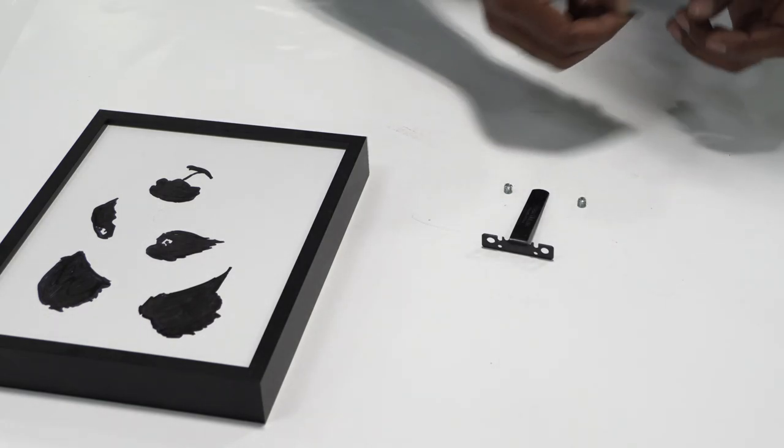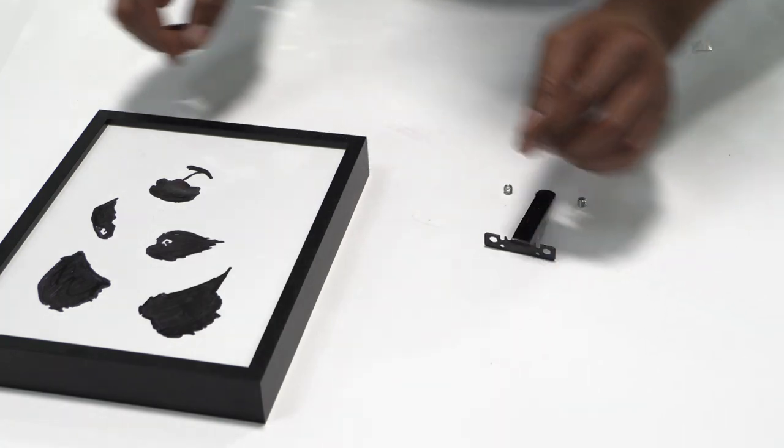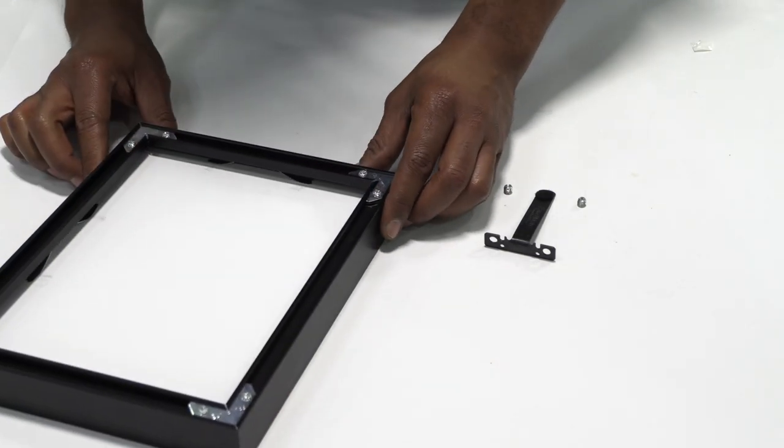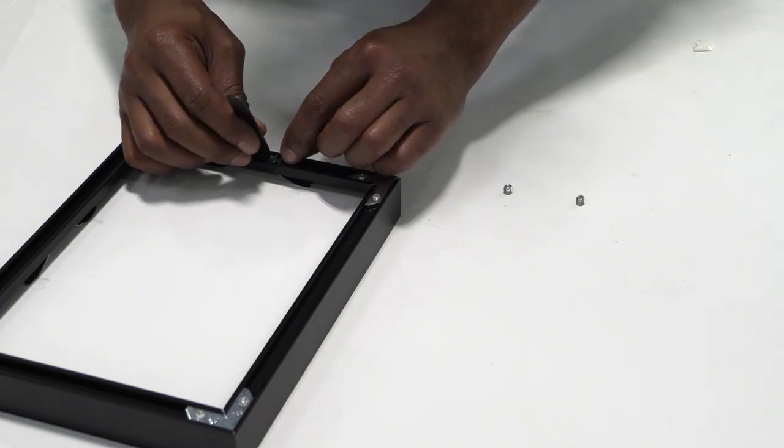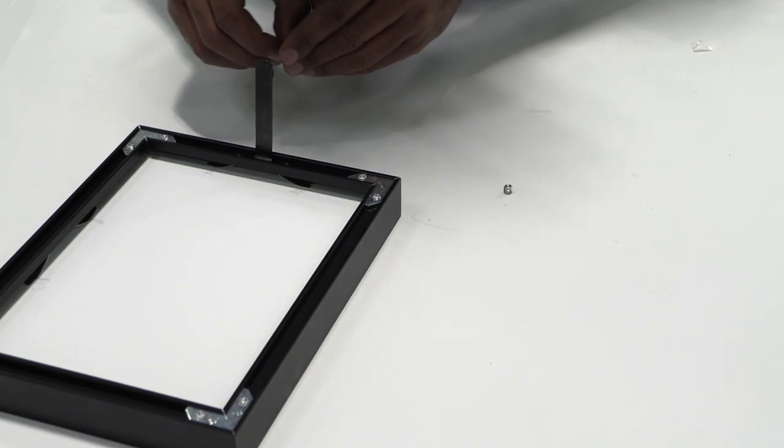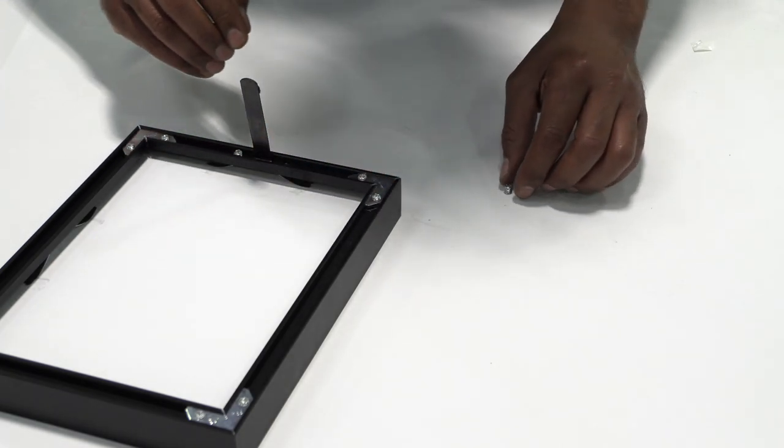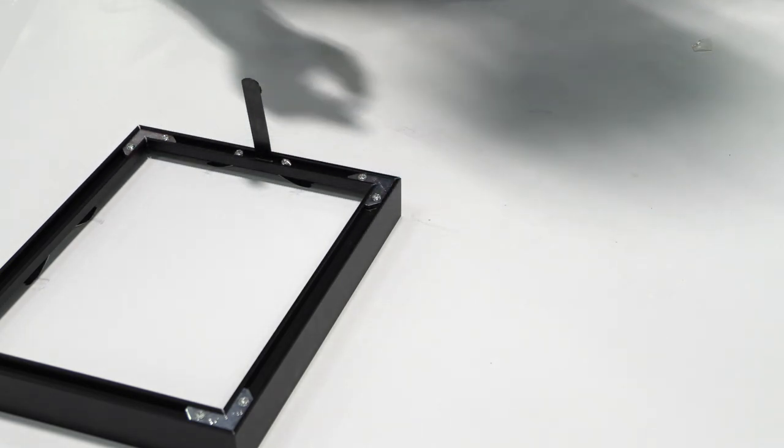For a metal frame, attach the included felt pad to the underside of the easel mate's long end. Align the bracket side to the middle of the bottom side of the metal frame track. Insert the included silver screws into the threaded holes, and tighten to securely attach the easel mate bracket to the frame.